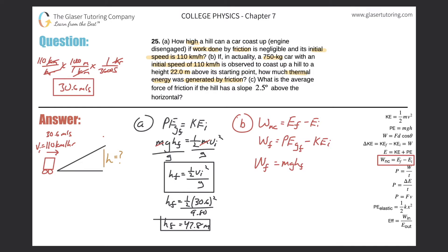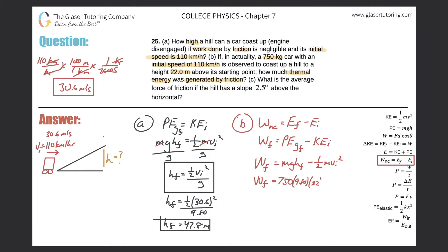Plugging in the values: work due to friction = (750)(9.80)(22) − 0.5(750)(30.6)². Calculating: 750 × 9.8 × 22 minus 0.5 × 750 × 30.6², the work due to friction comes out to be negative.